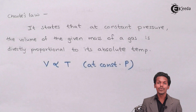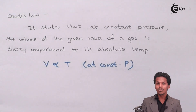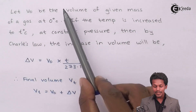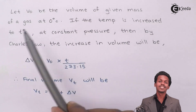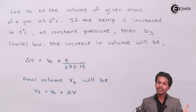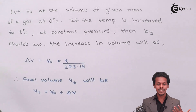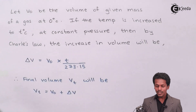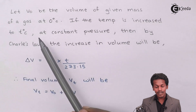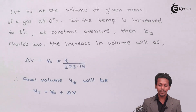This explains that volume is directly proportional to temperature. Now let us understand how the first statement is valid to obey Charles's Law and how it leads to that statement. Suppose let V0 be the volume of a given mass of gas at 0°C. So V0 is the volume present at 0°C. If the temperature is increased by T degrees Celsius at constant pressure,